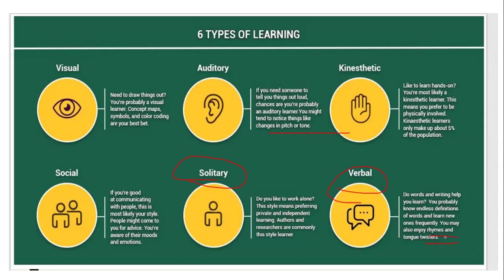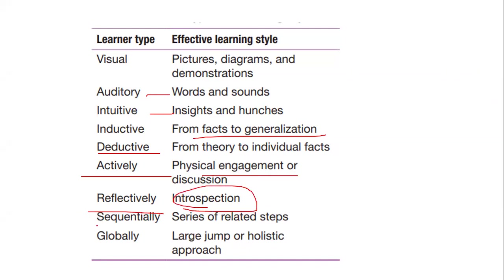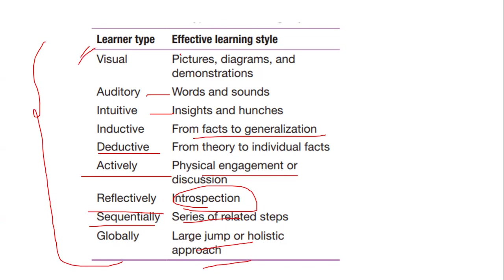Verbal learning consists of rhymes and tongue twisters. For an easy way to remember the learner types: Visual — pictures, diagrams, and demonstration; Auditory — words and sounds; Intuitive — insights and hunches; Inductive — facts to generalization; Deductive — theory to specific (general to specific); Active (kinesthetic) — physical engagement; Reflective — introspection; Sequential — series of related steps in order; and Global — large jumps or a holistic approach.